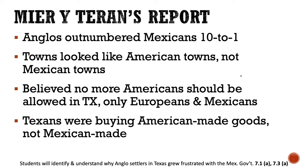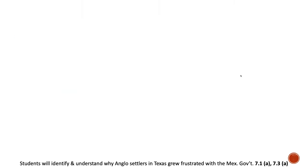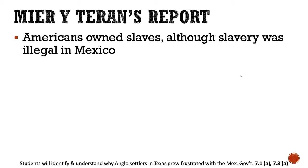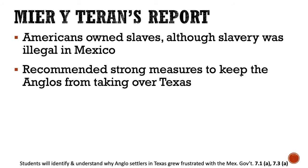This made Mier y Terán and many Mexican merchants upset because the Americans weren't buying their goods — they were ordering goods from the United States and having them shipped to Texas. Mier y Terán's report also said that Americans owned a lot of slaves, although slavery was illegal in Mexico. The Mexican government had sort of turned a blind eye to the fact that Americans had slaves, even though the Mexican Constitution of 1824 outlawed slavery. Mier y Terán's report recommended strong measures to keep the Anglos from taking over Texas.